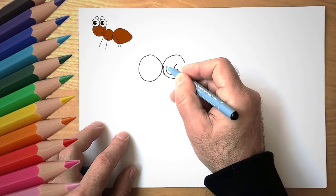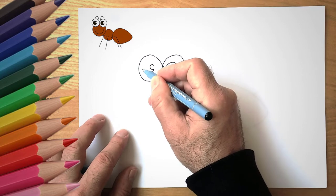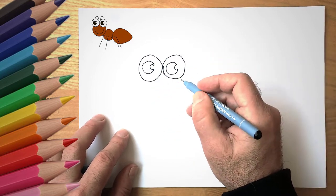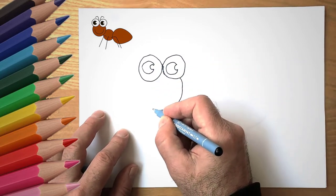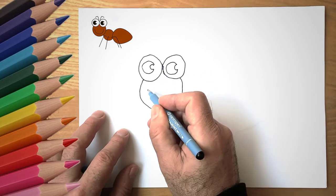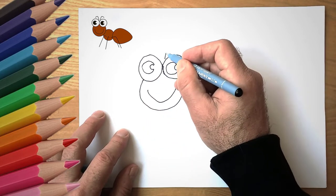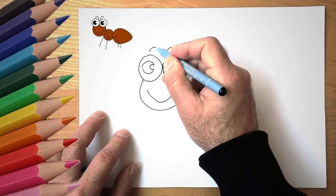First, we draw two circles, one circle next to another, so that they touch each other. These will be the eyes of our ant. In the middle of these two circles, draw the pupils of the eyes of the ant.